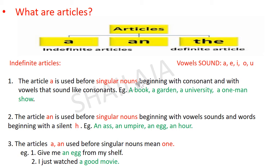Let's see the indefinite articles first. The article 'a' is used before singular nouns beginning with consonants and with vowels that sound like consonants. For example: a book, a garden, a university, a one-man show. You may wonder why 'university' uses 'a' since it starts with 'u', a vowel. We are looking at the vowel sound here, not the vowel letter. According to the sound, it has to be 'a university'.